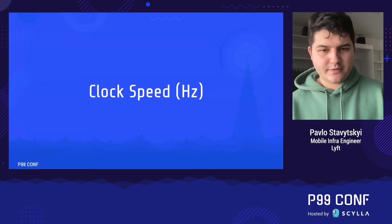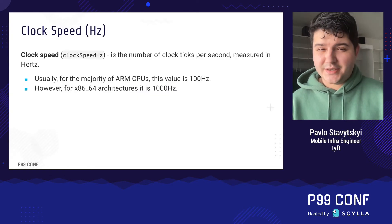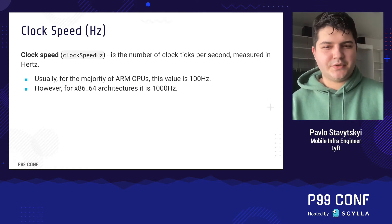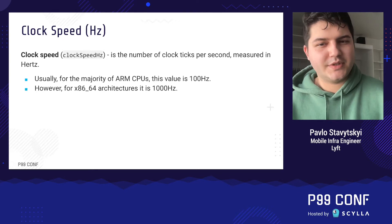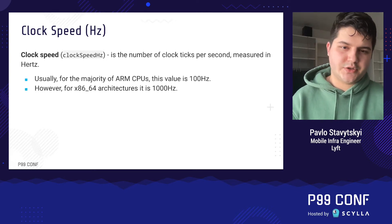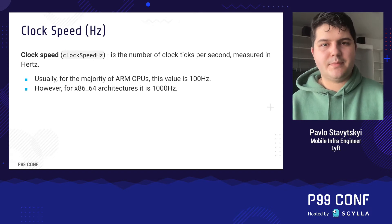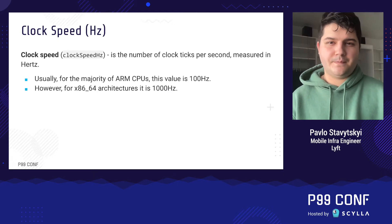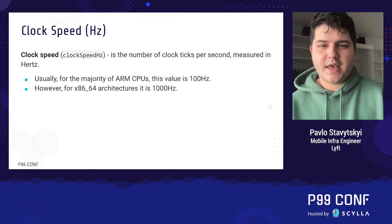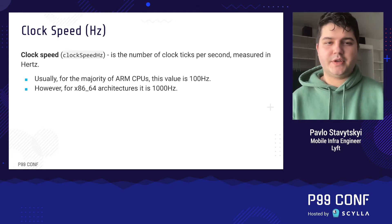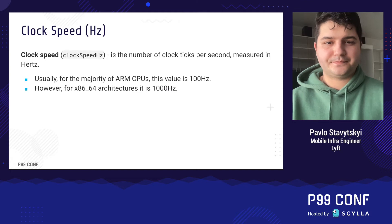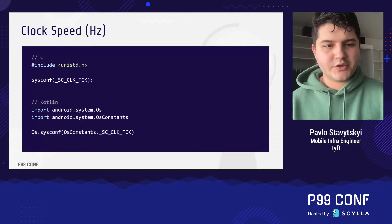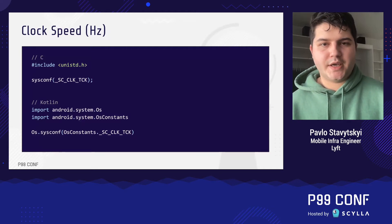The next metric is clock speed, which defines the number of clock ticks per second. Usually the majority of ARM CPUs use 100 as a static value, however on some other architectures it can be 1000 — for example, if you're using an emulator on a laptop with Intel CPUs, this value will likely be 1000. It's measured in Hertz, and we'll see why it's important shortly. Again, to get it we just use a sysconf function call with a different parameter.